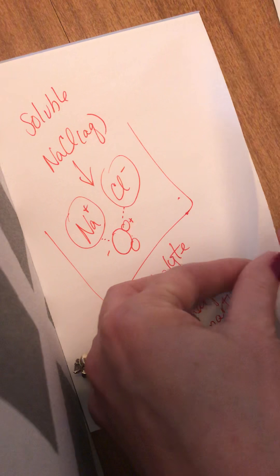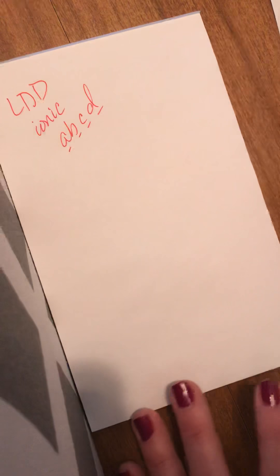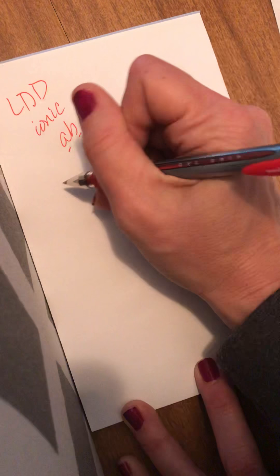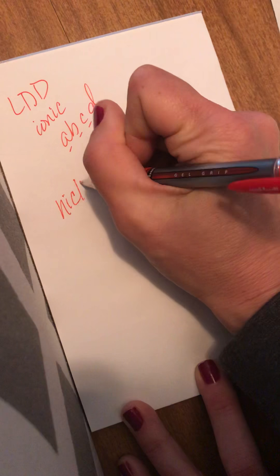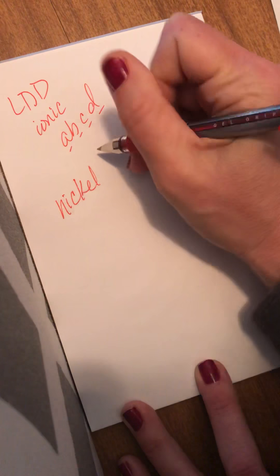Let's talk about how you do a Lewis dot diagram for an ionic bond. Lewis dot diagrams, if you are doing an ionic Lewis dot diagram, I like to say it's as easy as ABCD: put the atoms, brackets, charges, and dots. So let's do something different. Let's say I have nickel two chloride.